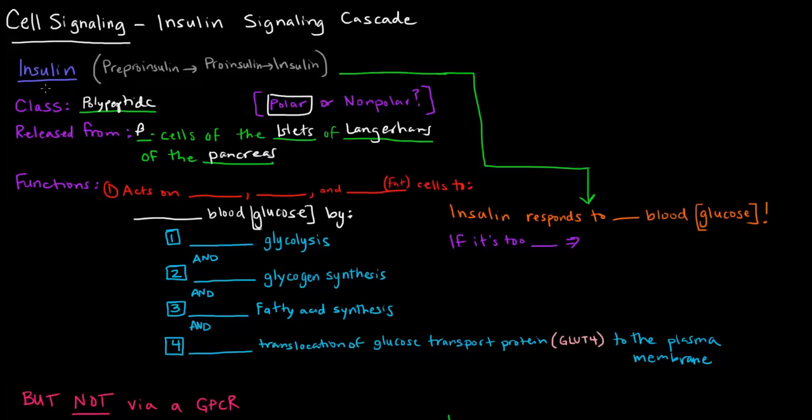So glucagon was released from the alpha cells, insulin is released from the beta cells. Now, insulin, you might have actually heard of that term before, and you might have heard it referred to diabetics, which we'll talk about later. Insulin responds to high blood glucose levels. If it's too high, lower it. That's what insulin does.